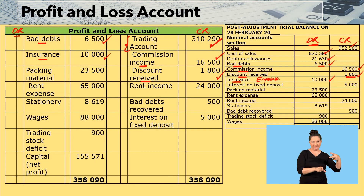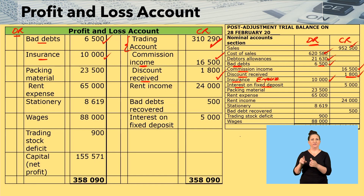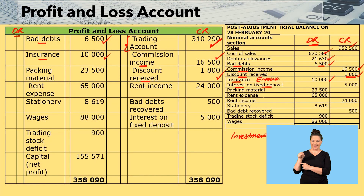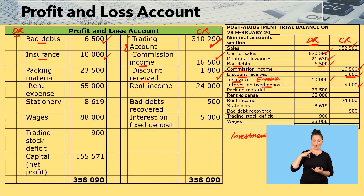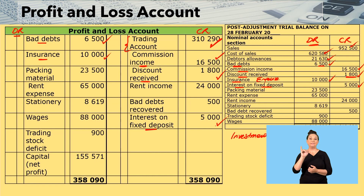The next one is interest on fixed deposit. Fixed deposit is an investment, and any interest on an investment is interest income. So the moment you have interest on fixed deposit, you see it on the credit side — it is interest income, interest on investment. In the profit and loss account, bring it to the credit side: interest on fixed deposit $5,000.